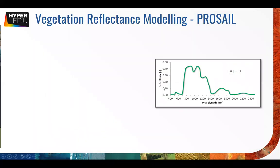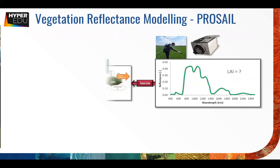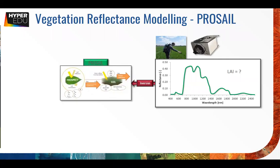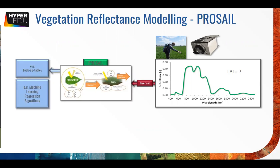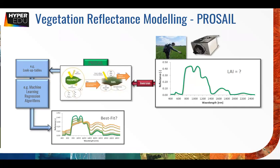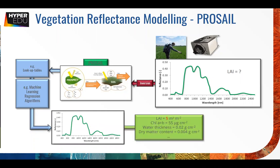It's nice to look at spectra, but what we actually want to do is retrieve actual parameters or variables from these spectra - for example the LAI. That's where vegetation reflectance modeling comes into play. We measure with a satellite or by hand, use a radiative transfer model, build lookup tables, and set up machine learning regression algorithms trained on that - that's the hybrid scheme Katya was presenting yesterday - which finds a best fit to the spectrum and retrieves the LAI.